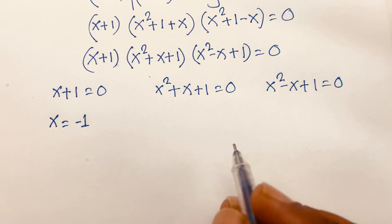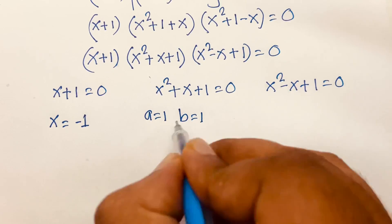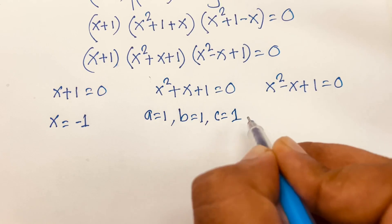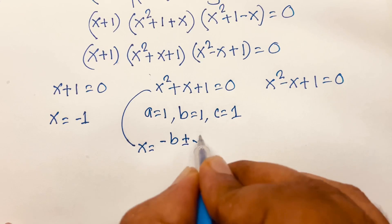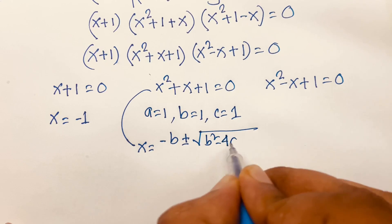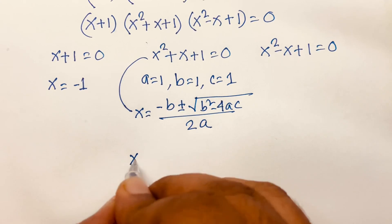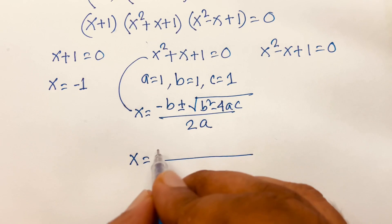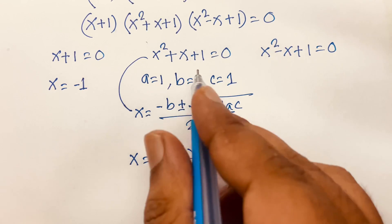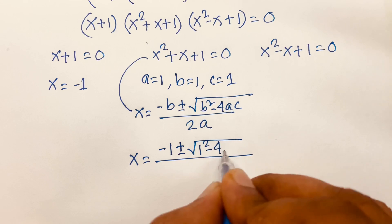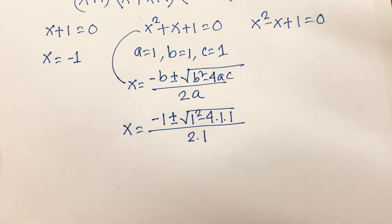From Case 1, x = -1. For Case 2, x² + x + 1 = 0 is a quadratic equation with a = 1, b = 1, c = 1. Using the quadratic formula x = (-b ± √(b² - 4ac)) / 2a, I substitute these values.